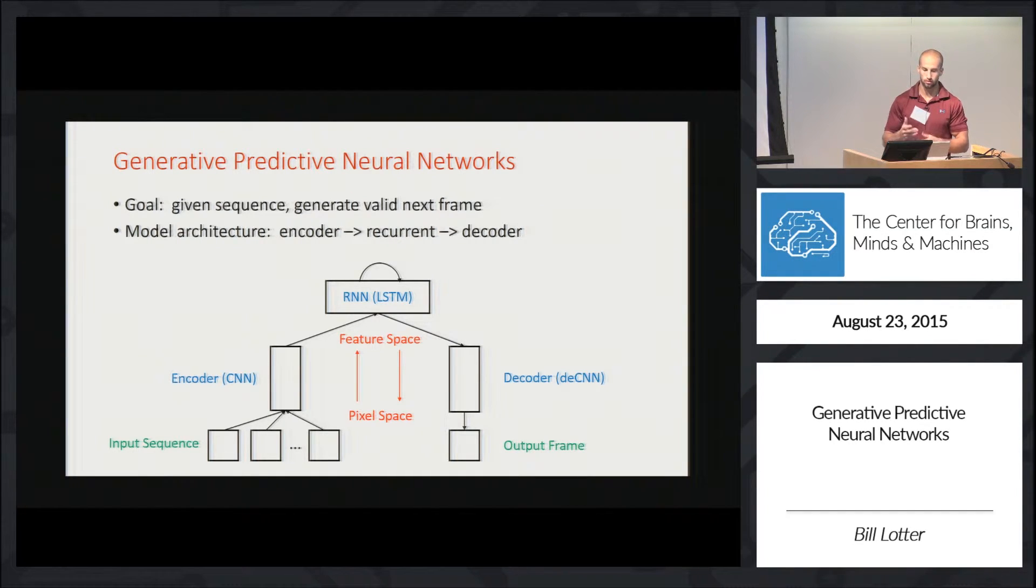To develop models to analyze this, I've developed neural networks with the goal of, given a sequence, predicting the next frame. For the model architecture, I use an encoder which feeds into a recurrent neural network, which then feeds into a decoder. The input sequence gets encoded in some feature space, and these feature vectors go through an RNN which produces a feature vector that goes through a decoder to produce an output frame.